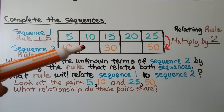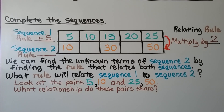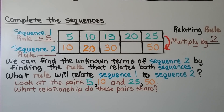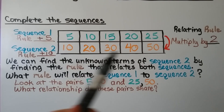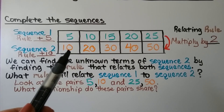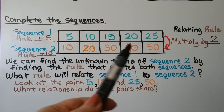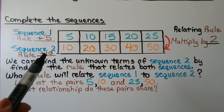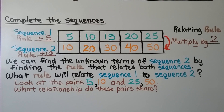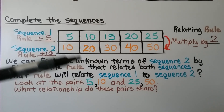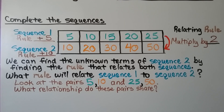10 times 2 is 20, and 20 times 2 is 40. We can look at the terms in sequence 2 — they go 10, 20, 30, 40, 50 — so the rule for sequence 2 is plus 10. And the relating rule for sequence 1 and sequence 2 is multiply by 2.